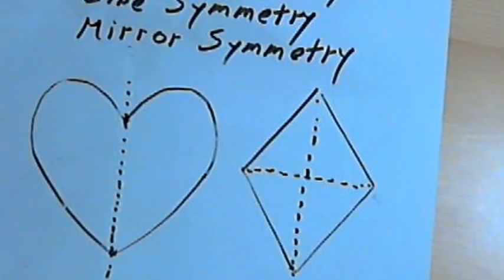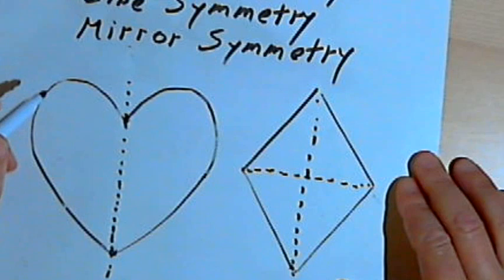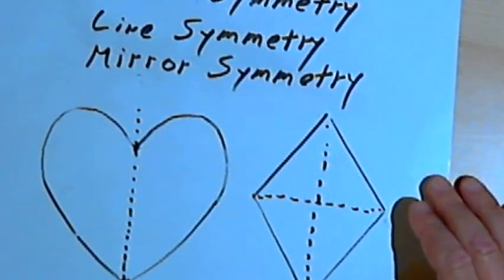If you had a pentagon, you'd have five lines of symmetry. So you could have a number of lines of symmetry. Okay, so that's what reflection symmetry is about. Then we've got something called rotational symmetry.